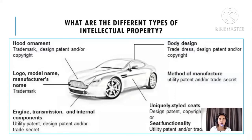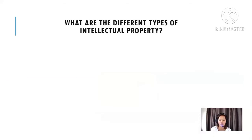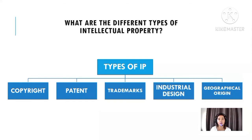The different types of intellectual property include trademark, logo, and various features of a product — for a car, that includes the hood, the logo, the engine, uniquely styled seats, the method of manufacturing, and the body design. These are all protected by intellectual property. The main types are: copyright, patent, trademark, industrial design, and geographical origin.